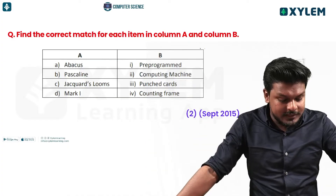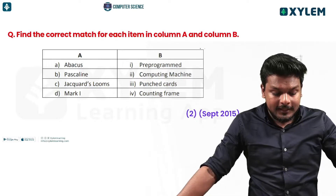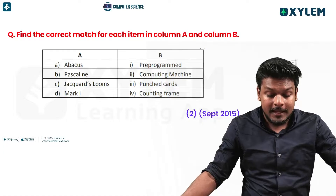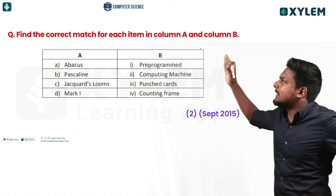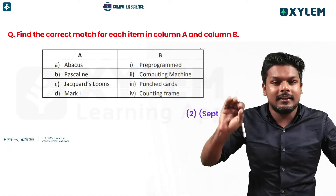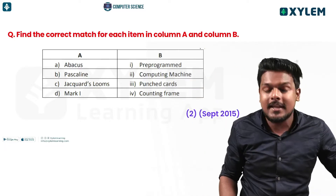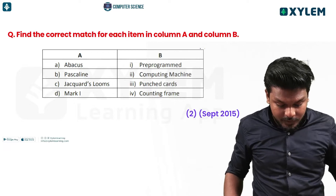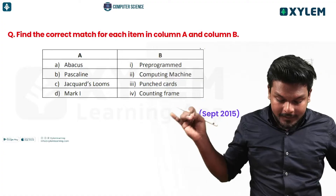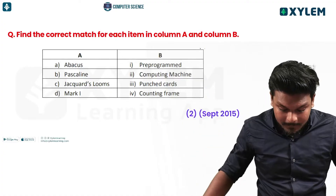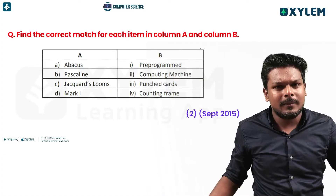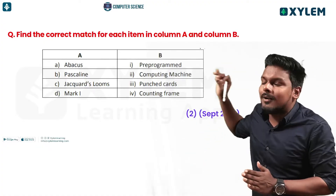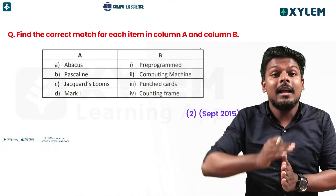The next question: find the correct match for each item in column A and column B. Column A has: Pascaline, Jack Wardlow, Mark I. Column B has: Programming and Computing Machine, Punched Cards, Counting Frame. You can discuss the points and get the correct answers.